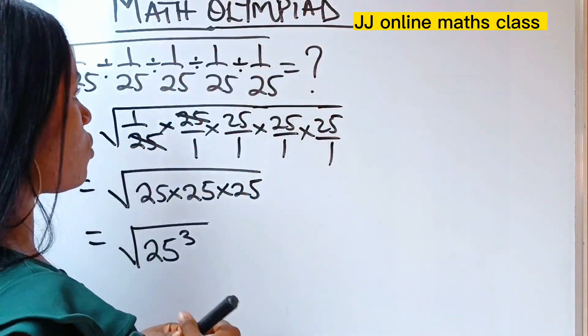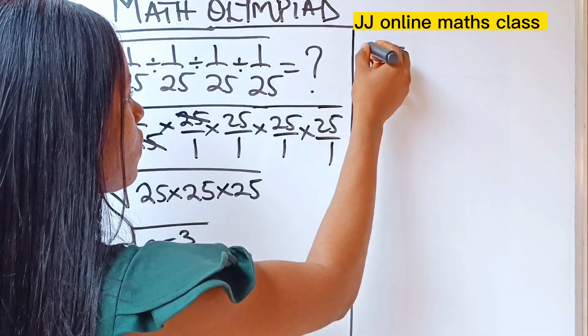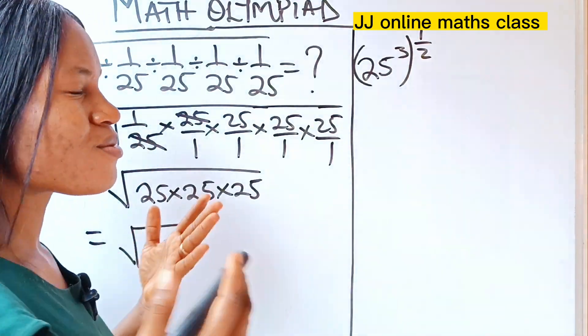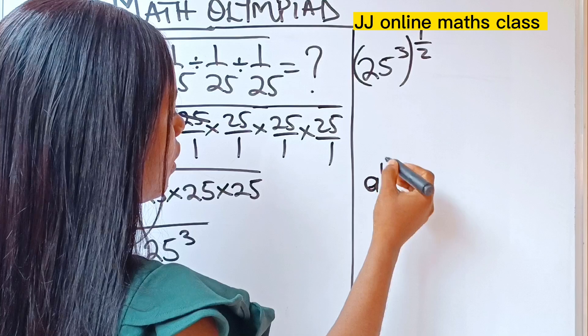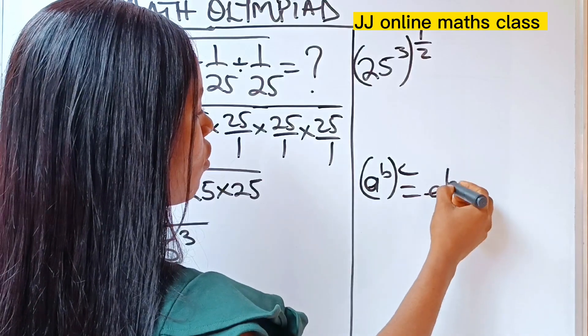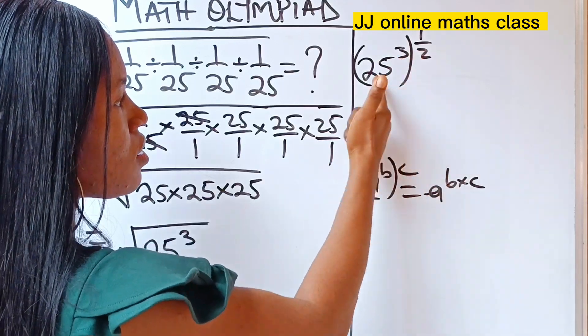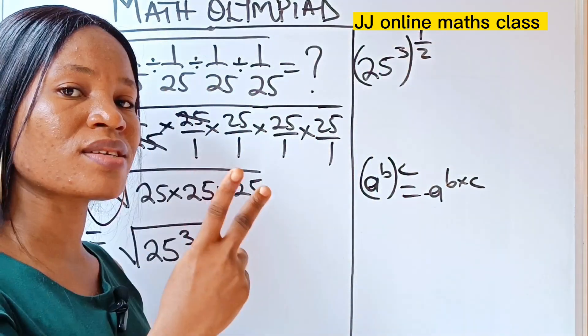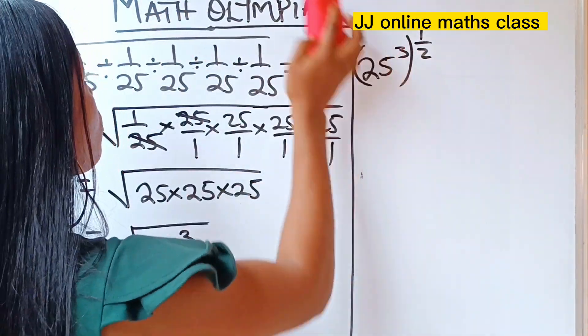square root of 25 to the power of 3, all I need to do is 25 to the power of 3 raised to the power of half. Now, remember also that a to the power of b raised to the power of c is the same thing as a to the power of b times c. That is when you have two powers on a particular number, you multiply them out. Just multiply the two powers out so that you get only one power for the number. So that is exactly what we are going to do now.